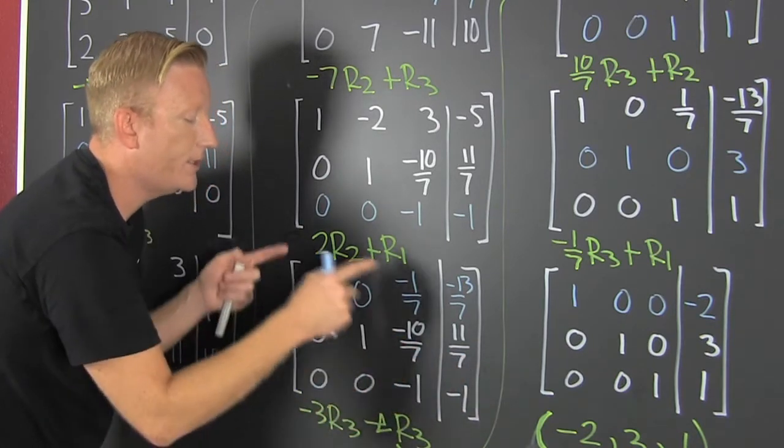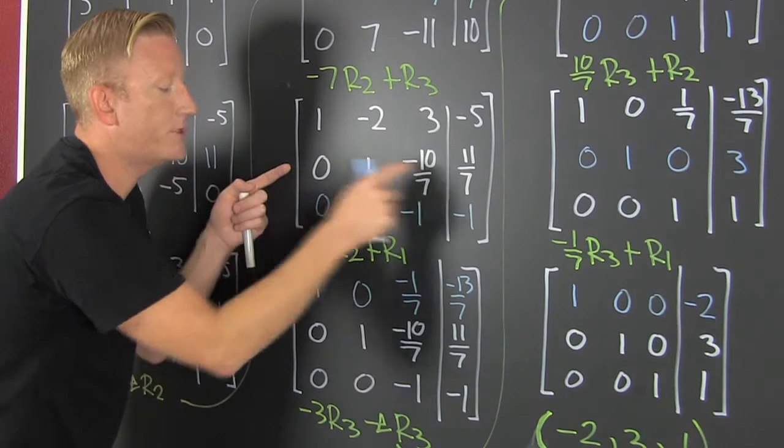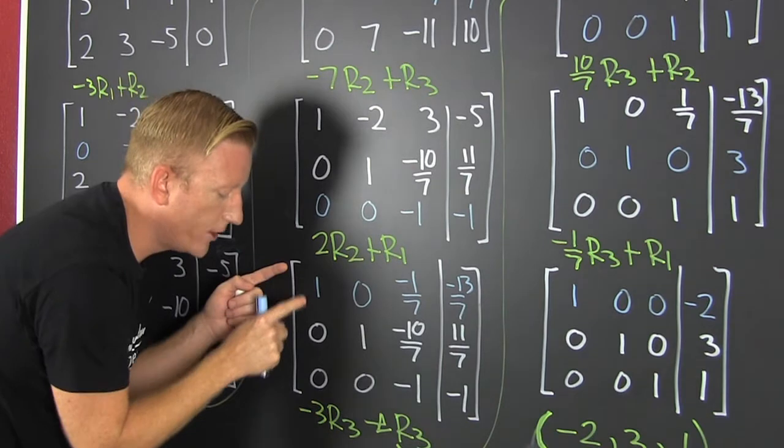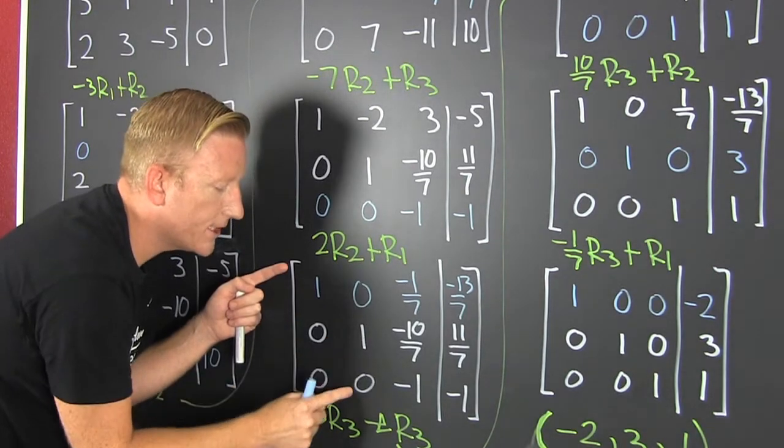Now that we're all recopied, you do 2 times row 2 and add it to row 1. That's how we get that change. So we got a 1 kill kill, 1 kill kill.